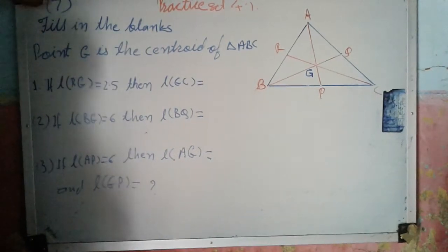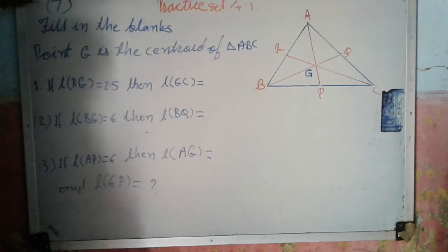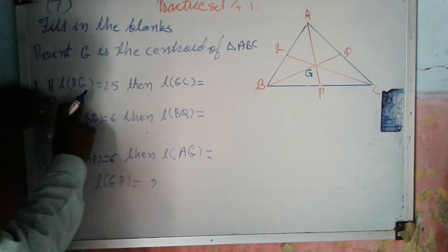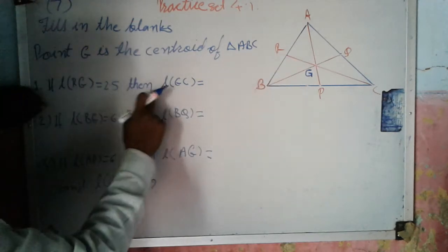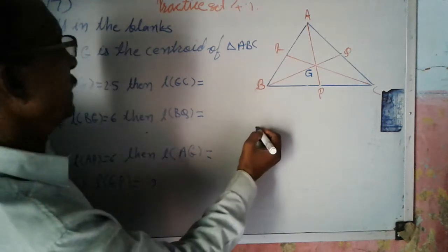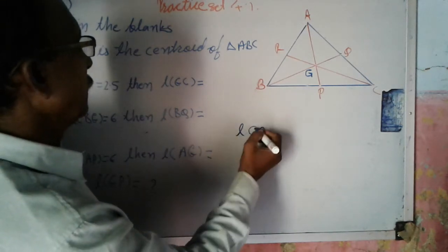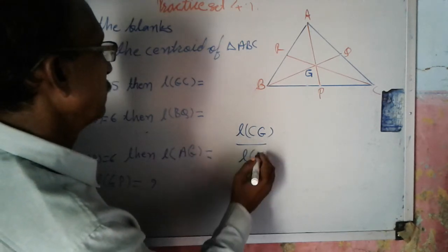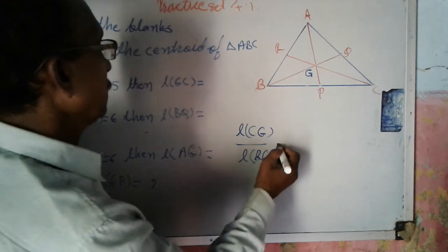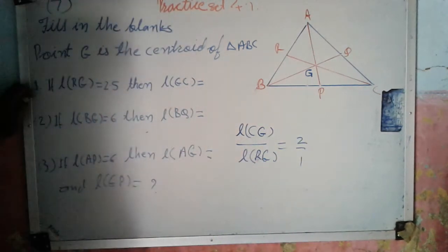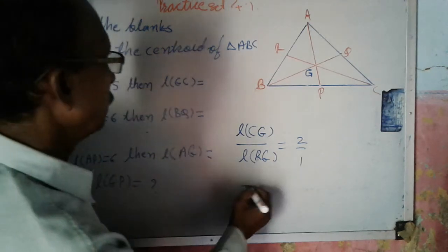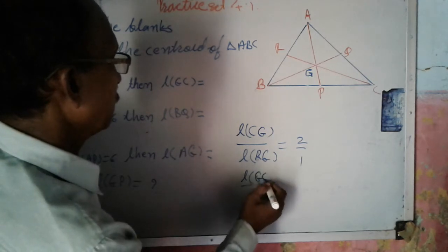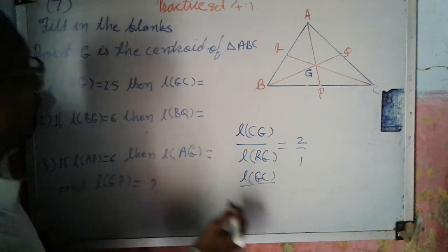Now practice it for point 1, question number 7, fill in the blanks. A figure is given here. Point G is the centroid of triangle ABC. RG is equal to 0.5, so we have to find CG. We know that CG to RG, this ratio is 2 upon 1. So here RG is given, therefore length of CG upon RG is given as 0.5.